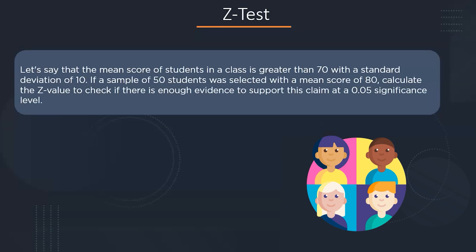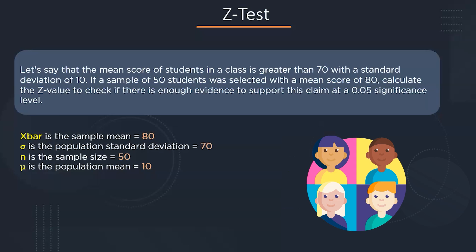Let's say the mean score of students in a class is greater than 70, with a standard deviation of 10. If a sample of 50 students was selected with a mean score of 80, we have to calculate a Z-value to check if there is enough evidence to support this claim at a 0.05 significance level. We have x̄ = 80, σ = 10, n = 50, and μ = 70. Putting all values into the formula, we get a Z-value of 7.09.